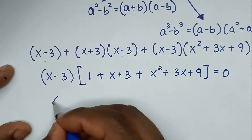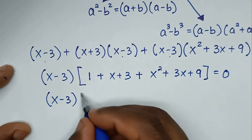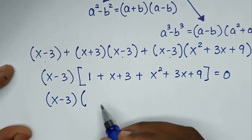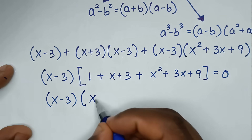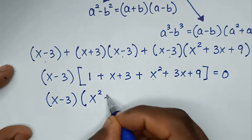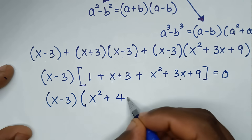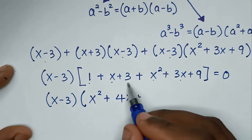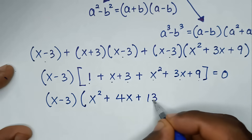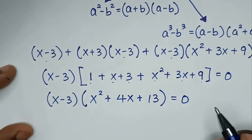Then it will be (x minus 3) bracket — here x squared plus x plus 3x is 4x, plus 1 plus 3 is 4, 4 plus 9 is 13 — bracket is equal to 0.